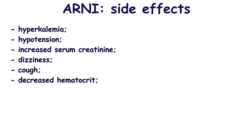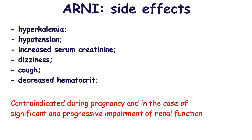Renal function may be deteriorated particularly in patients whose glomerular filtration rate is dependent on afferent arteriolar vasoconstriction by angiotensin-2. A small elevation of serum creatinine often occurs at the initiation of therapy, and the drug should be discontinued in patients with significant and progressive impairment of renal function. This drug is not prescribed during pregnancy and in case of pregnancy should be discontinued as soon as possible.